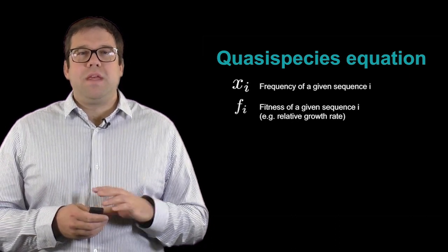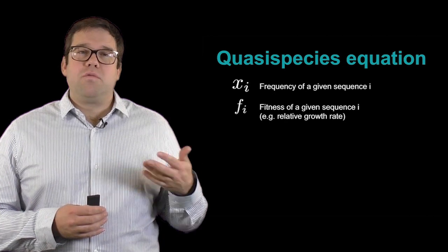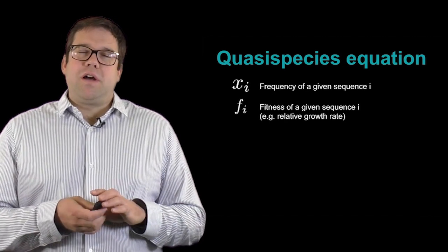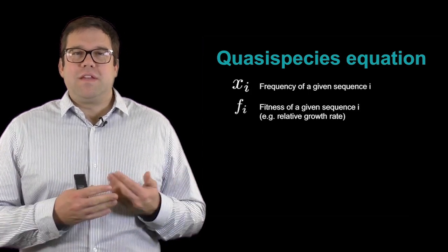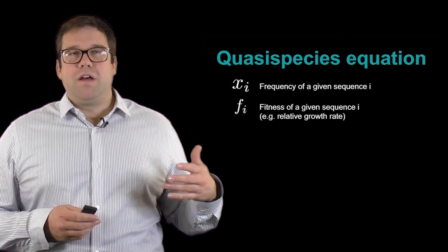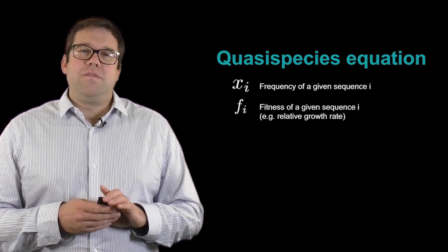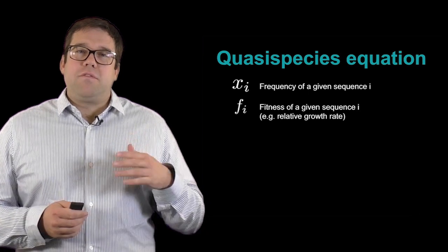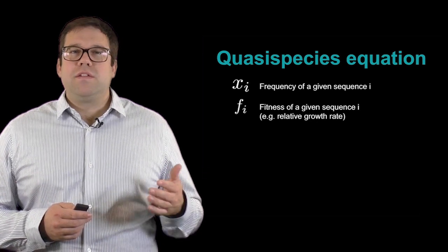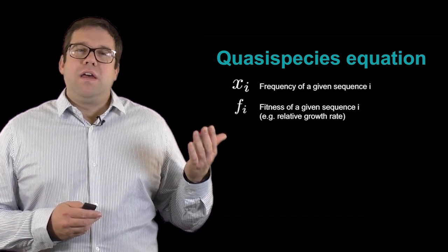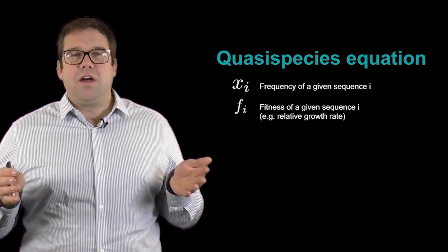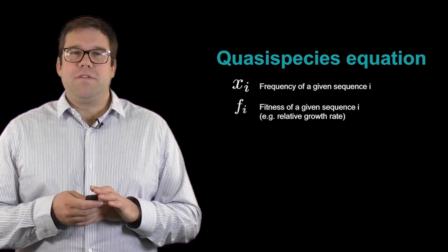So x_i is now the frequency of one sequence. This would be, for example, the number of individuals of one sequence divided by the total number of individuals. If we have a large enough population, then we're comfortable talking about this sequence as a continuous variable, as you could have real numbers for the values of these different frequencies. For each of these sequences, we also want to assign a fitness. This is just the relative growth rate. So now we have, for one sequence i, these two different characteristics, and for all possible sequences for a genome of length L, we now have a vector of x's and f's.